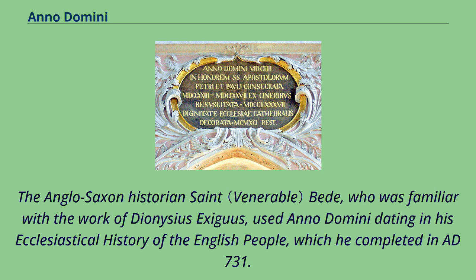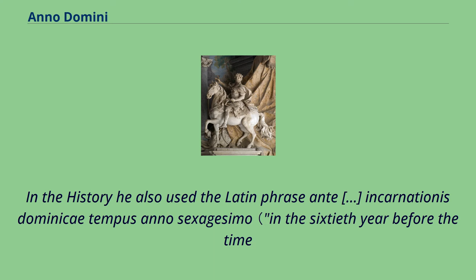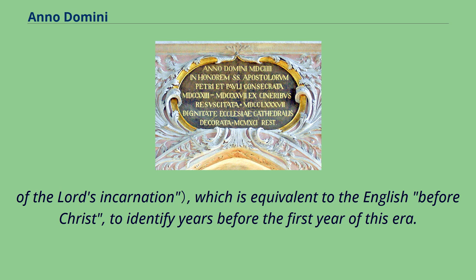The Anglo-Saxon historian St. Bede, who was familiar with the work of Dionysius Exiguus, used Anno Domini dating in his Ecclesiastical History of the English People, which he completed in AD 731. In the history he also used the Latin phrase meaning 'in the 60th year before the time of the Lord's Incarnation,' which is equivalent to the English 'before Christ,' to identify years before the first year of this era.